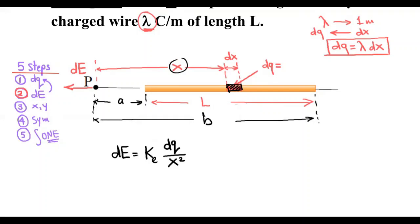Step three: we need to make a resolution. In this question the electric field is already a horizontal component, so the electric field we just found is already in the x-direction — this step is done. Step four: if we had two components we would check symmetry to cancel some, but here we have only one component and the rod is entirely to one side of the point, so there is no symmetry to apply.